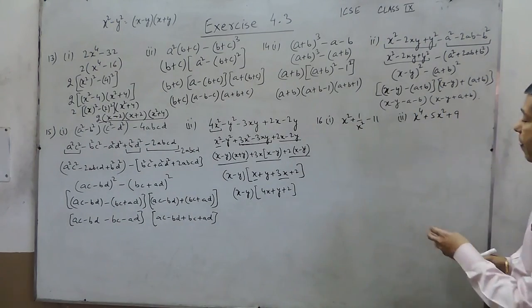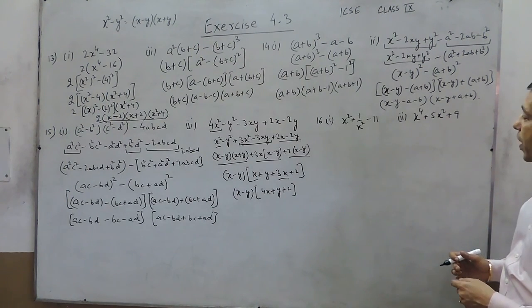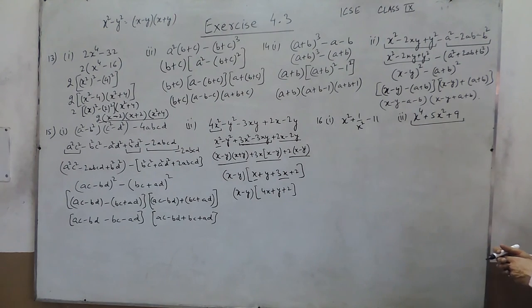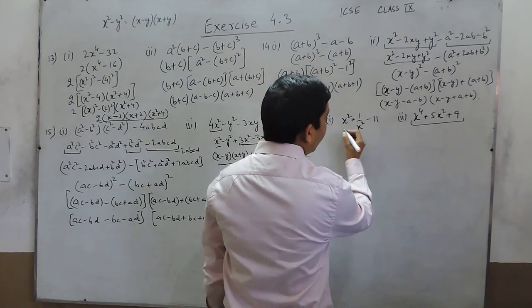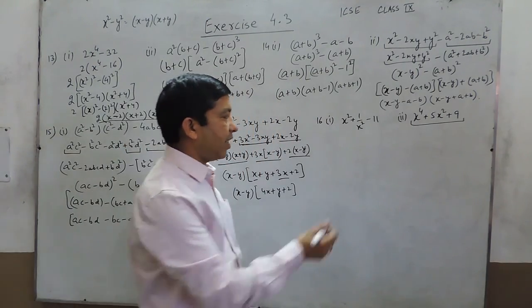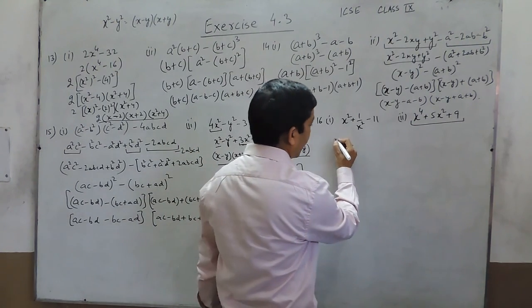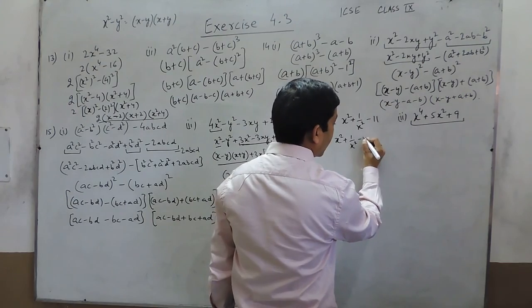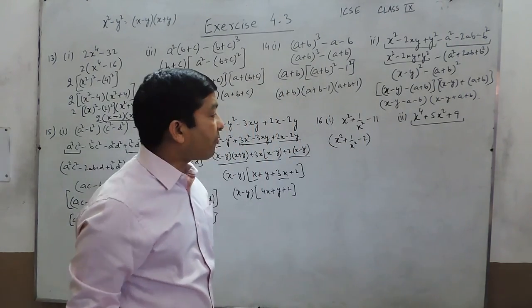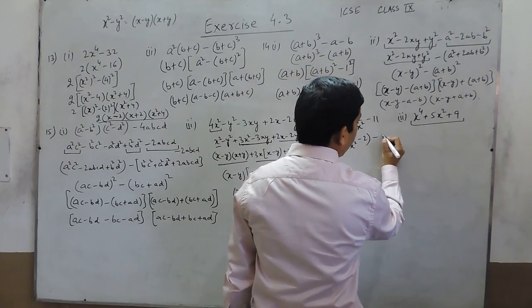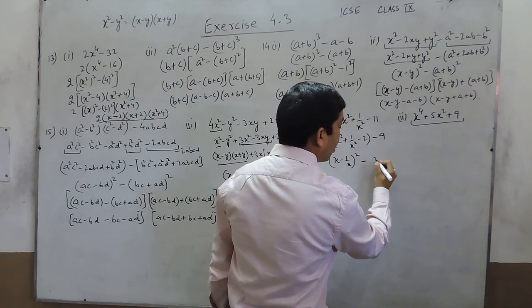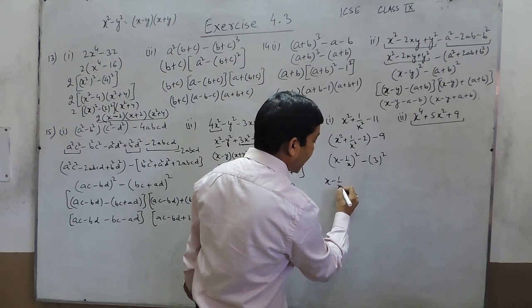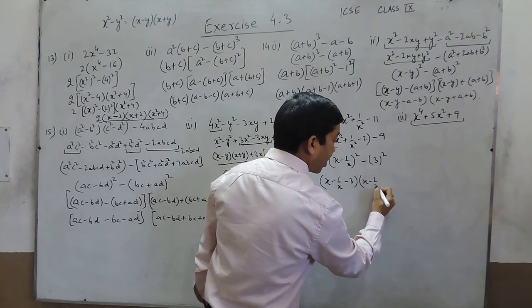Question number 16 part 1. We have to understand how to make a perfect square. For x to the power 4 plus 5x square plus 9, this cannot be factorized unless we make it a perfect square. Similarly, x square plus 1 upon x square minus 11 cannot be factorized without making it a perfect square. We know x square plus 1 upon x square minus 2 is a complete perfect square, and here it is minus 11, so minus 2 leaves remaining value minus 9. This term becomes x minus 1 upon x whole square minus 3 square, giving factors x minus 1 upon x minus 3 and x minus 1 upon x plus 3.